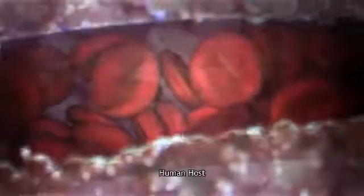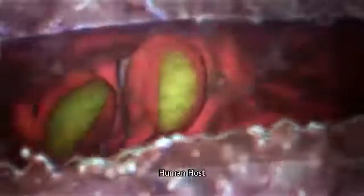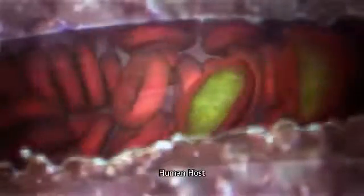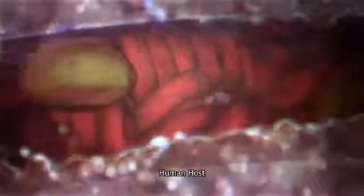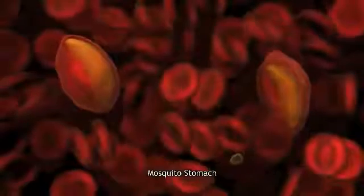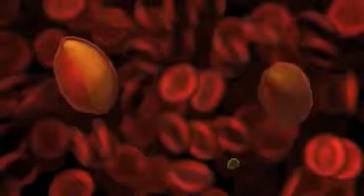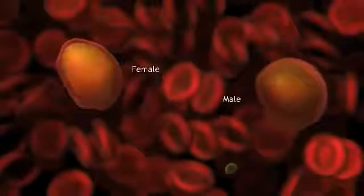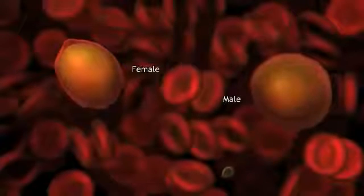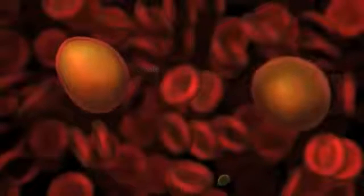However, back in the human host, a few of the parasites turned into a different type of cell, one that is sexual but remains dormant. Malaria sex is triggered when the warm human blood begins to cool inside the insect's stomach. The female form of the parasite matures into an egg.